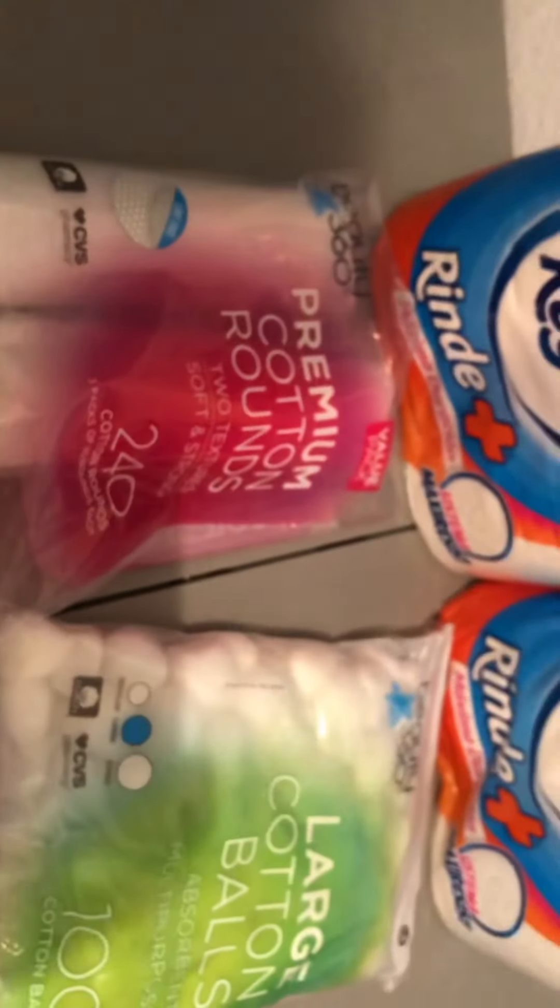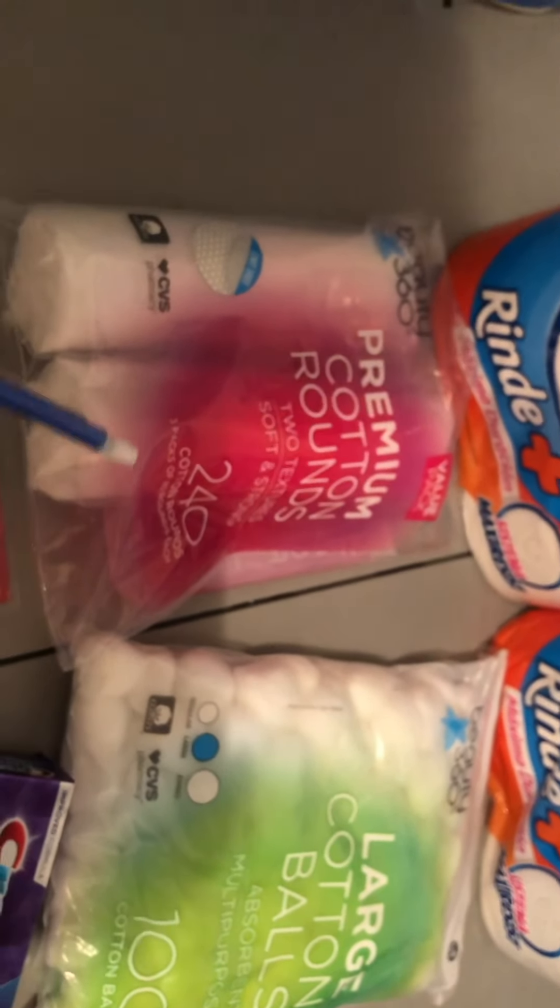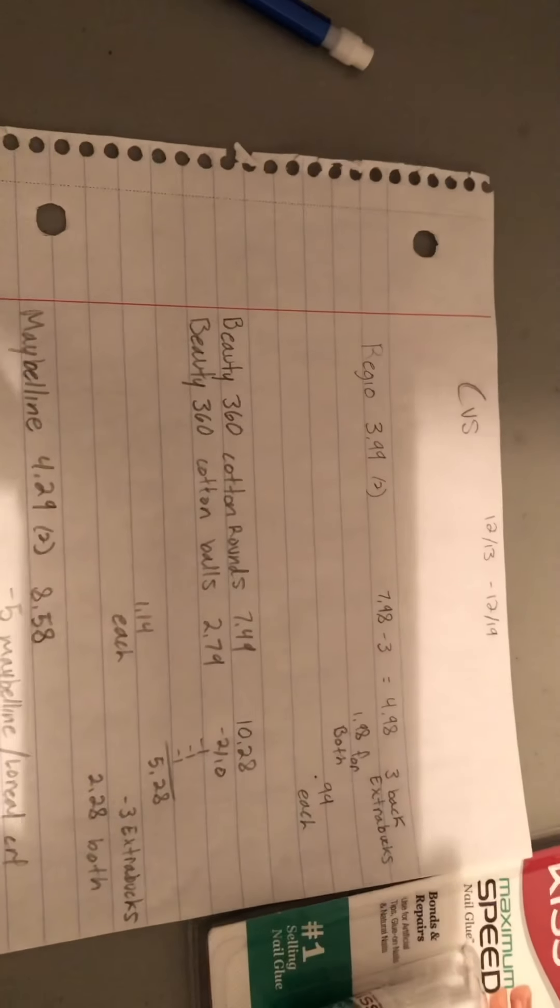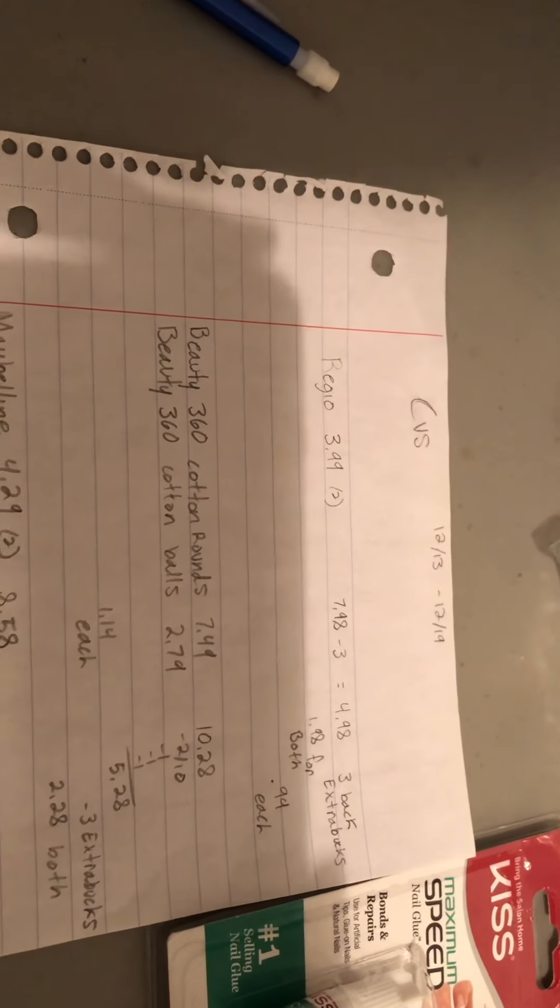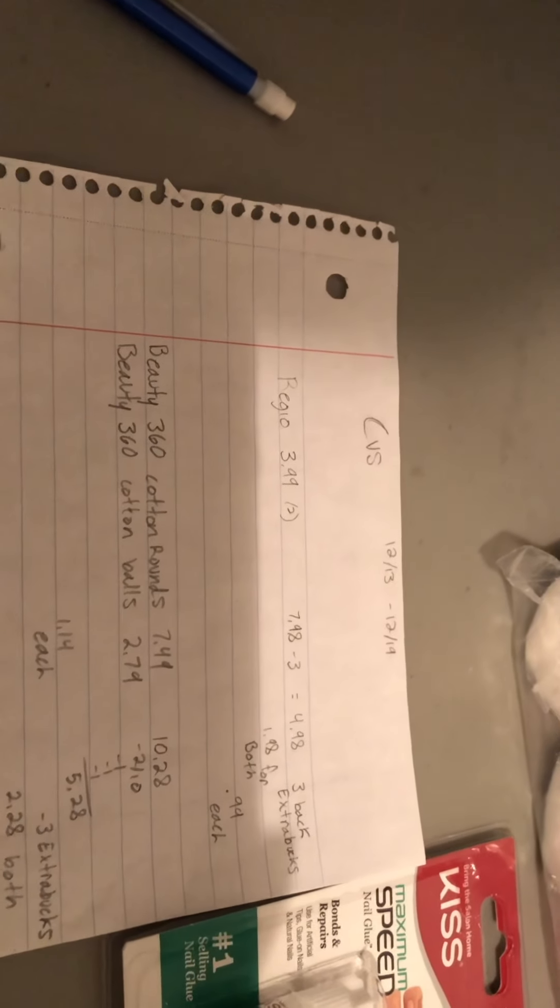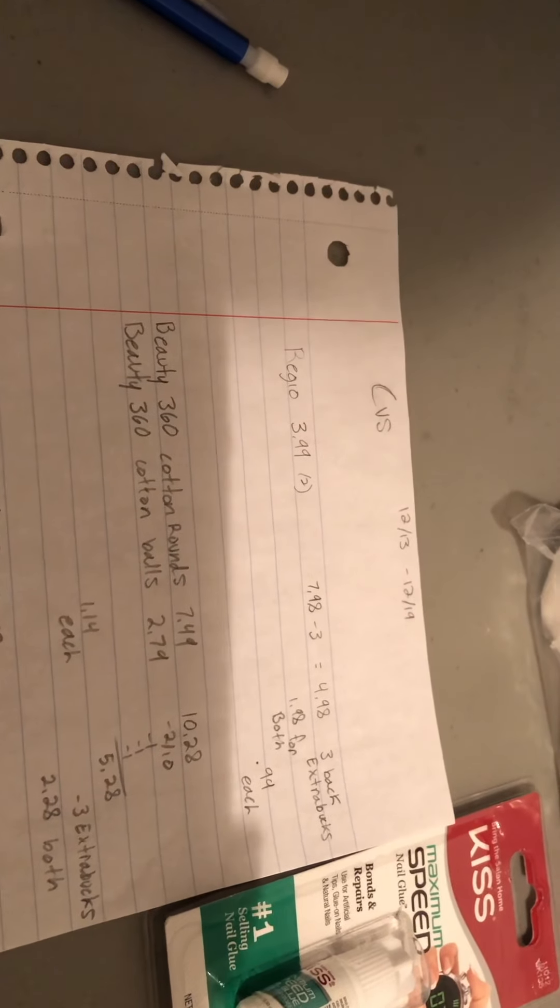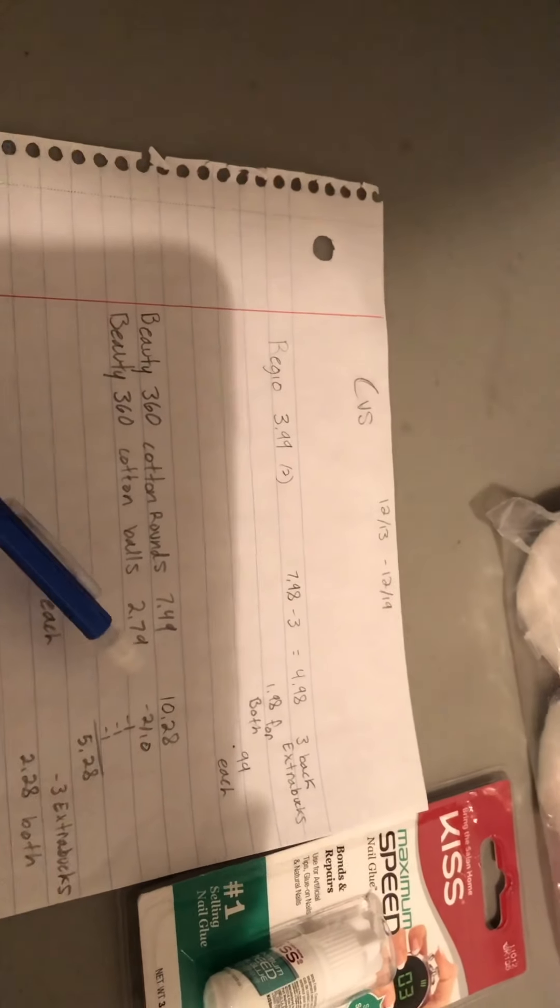Next we'll talk about the beauty 360 cotton. This one did come in a pack of three but I took one out. The beauty 360 cotton rounds are $7.49 and the beauty 360 cotton balls are $2.79, making it a total of $10.28.